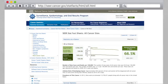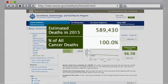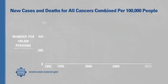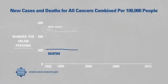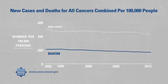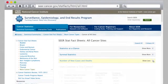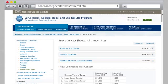The number of people who die from cancer in a year can be shown as the total number of deaths, or as the number of deaths due to cancer per 100,000 people. The number of deaths due to cancer is called a mortality rate.